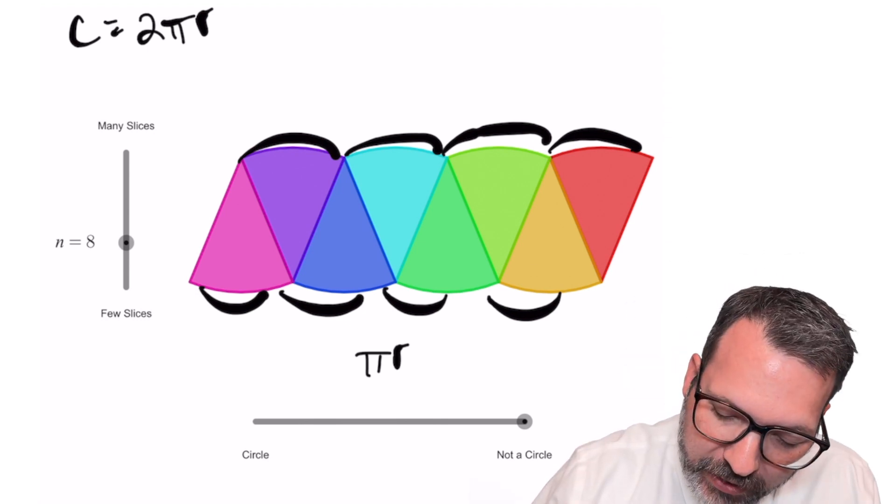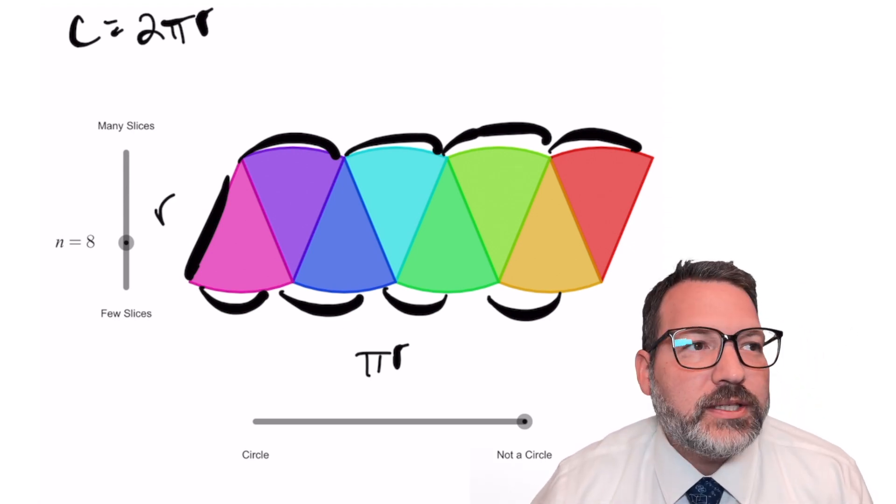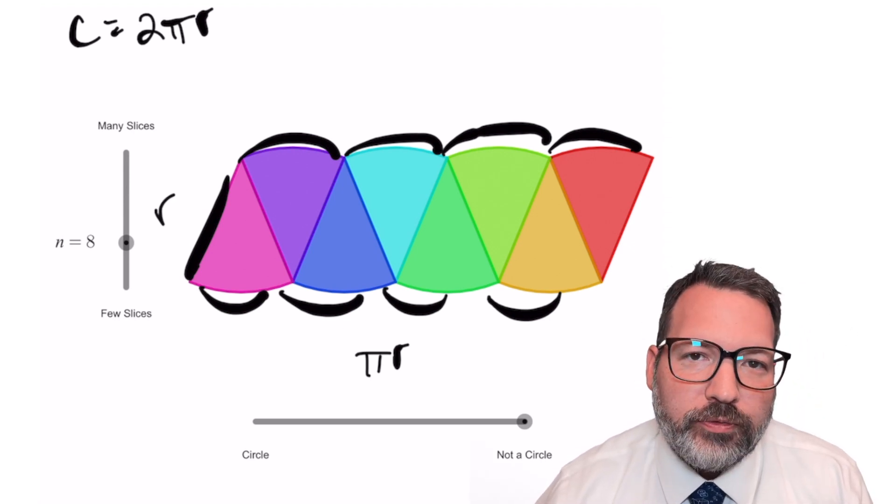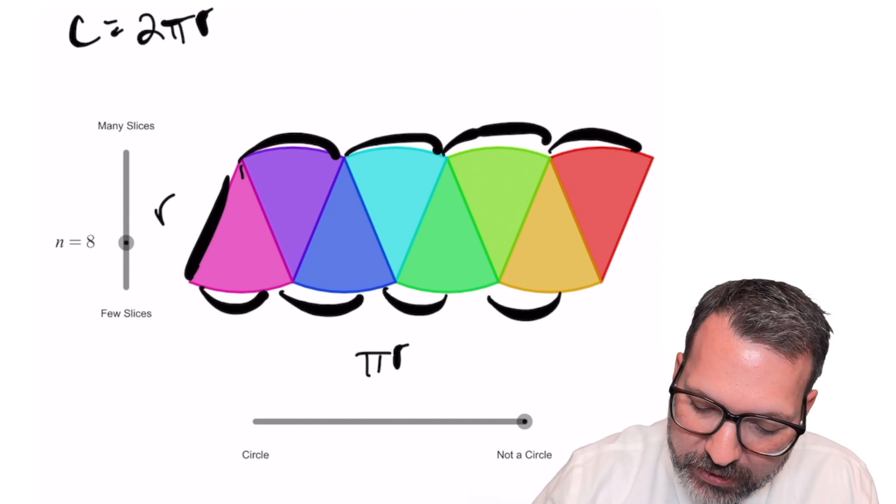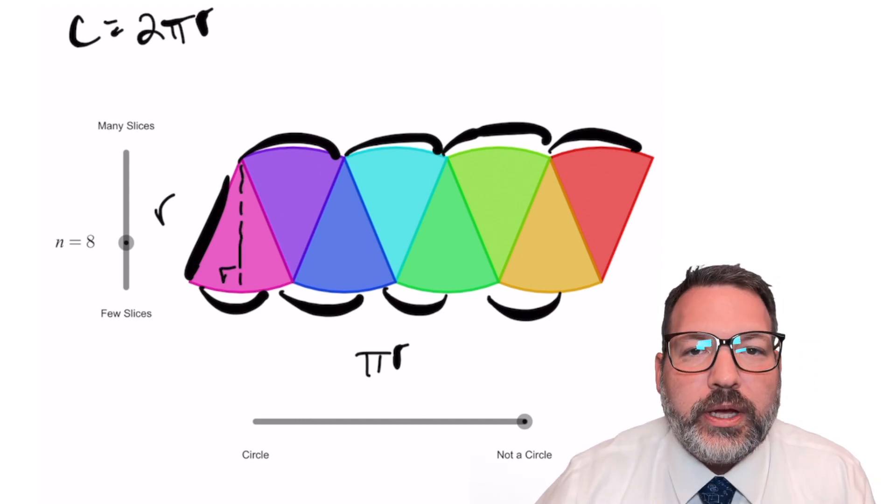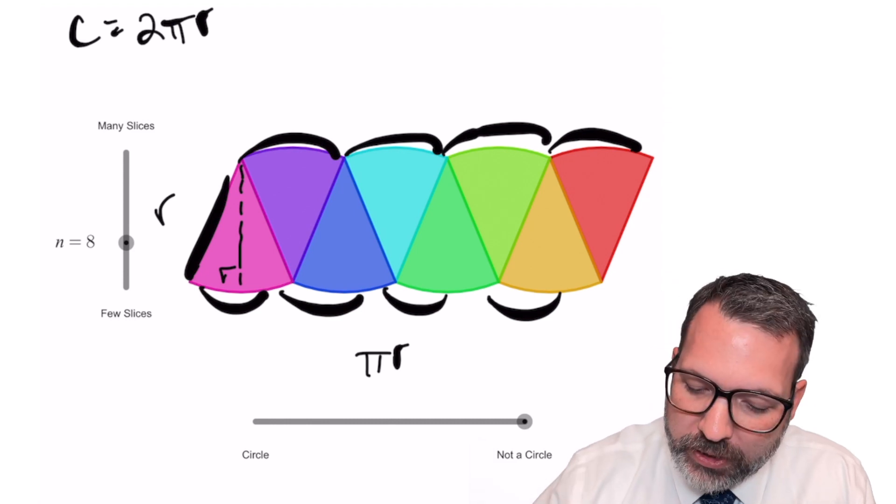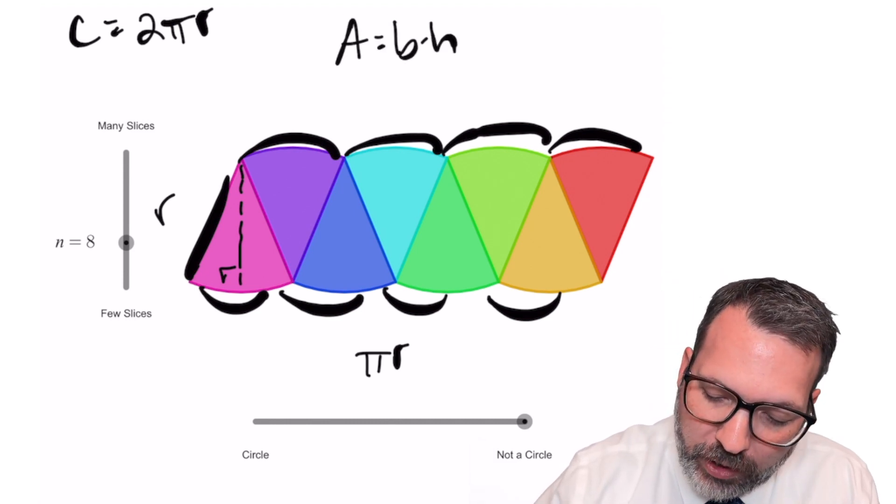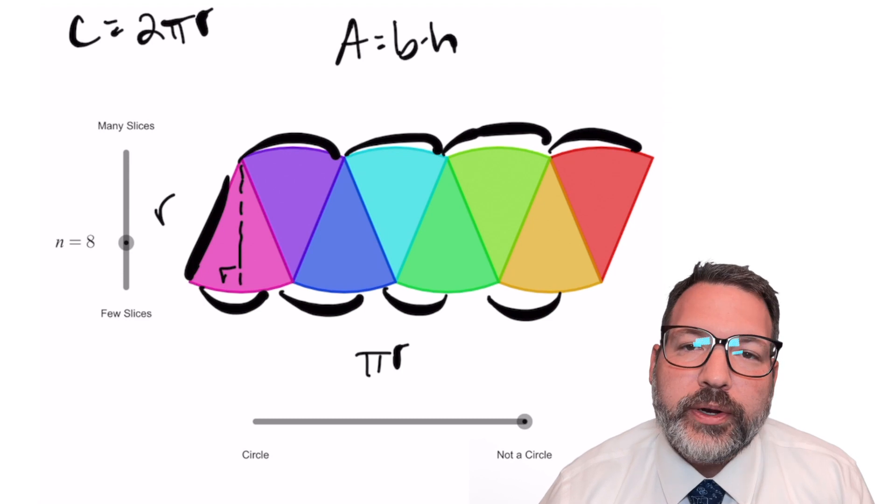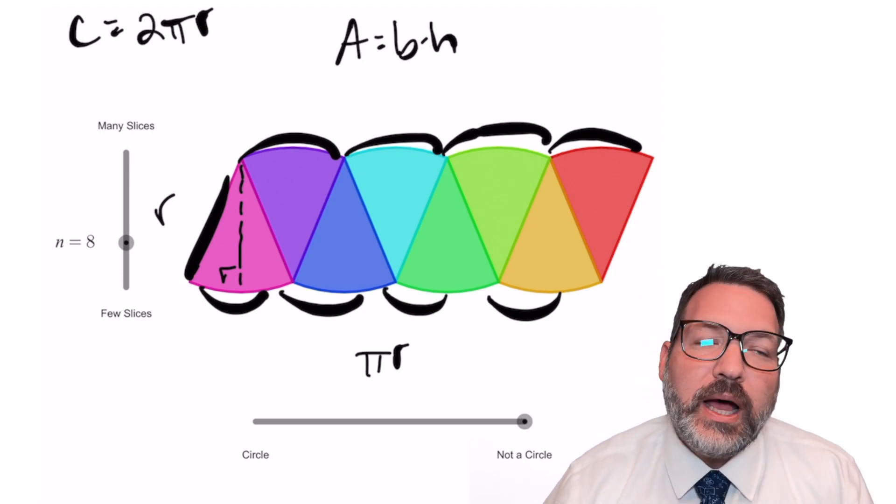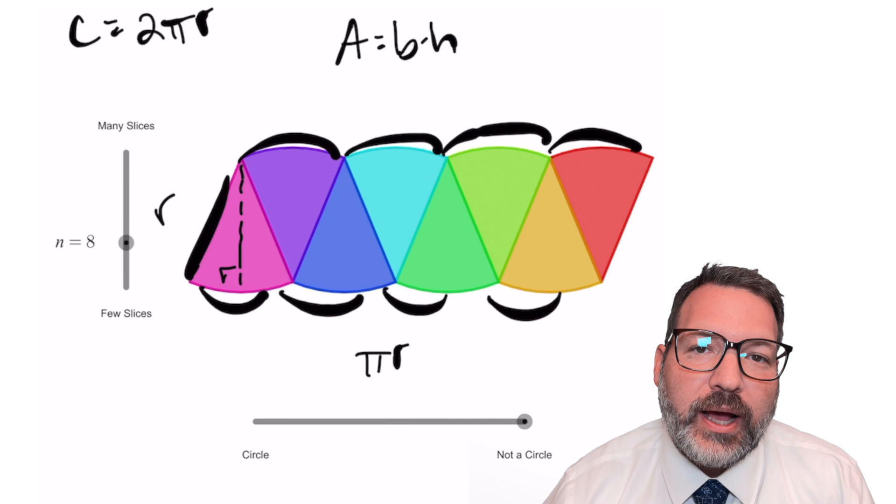We also know at least the slant height of this parallelogram because that's the radius of the circle itself. Now, the problem right now is we would need to do some kind of fancy trigonometry to figure out the straight up and down height of this parallelogram if we wanted to use something like the area formula for a parallelogram, where we multiply the length of the base times the length of that straight up and down height.